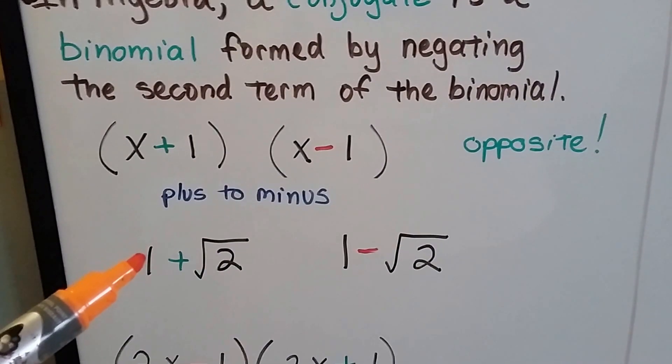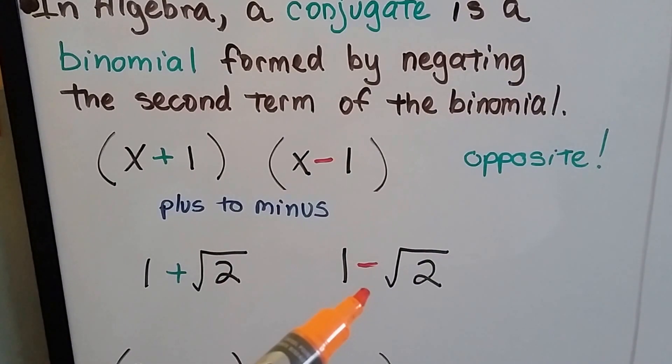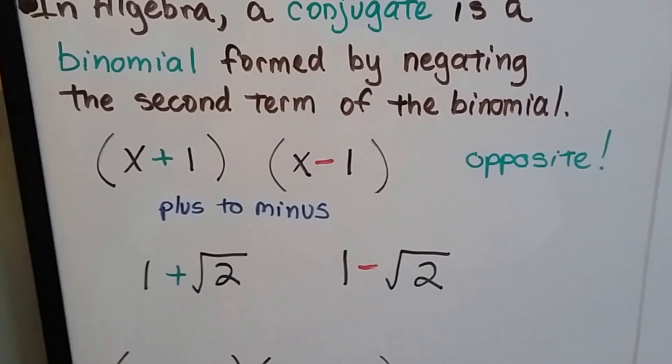If we have 1 plus the square root of 2, a conjugate of it would be 1 minus square root of 2.